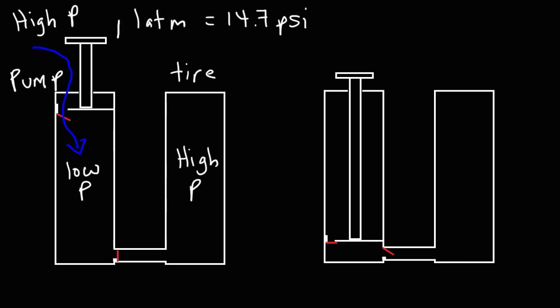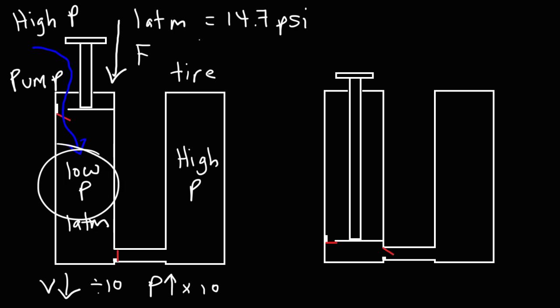The next thing we're going to do is push the piston down — apply a downward force to compress the air on the left side. We're going to decrease the volume of the chamber on the left by a factor of 10. If we decrease the volume by a factor of 10, the pressure is going to increase by a factor of 10. Once air flowed into the pump, the two pressures reached equilibrium — the pressure inside was 1 atm. But now, when we apply a downward force to compress the air, the pressure will increase by a factor of 10 — so it's going to be 10 atm.